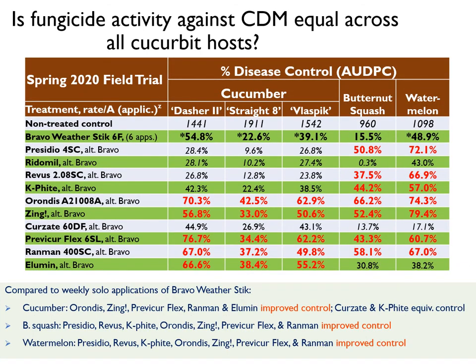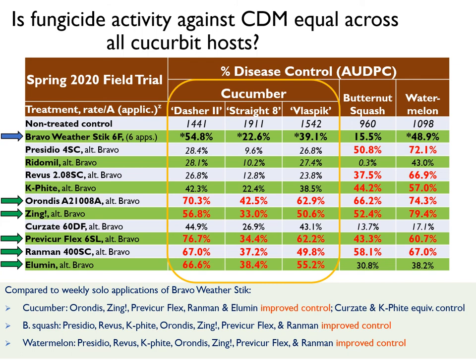Last spring, we repeated the trial but increased the number of cucumber varieties to include the highly susceptible Straight-8 and the pickling variety Vlaspik. We also included watermelon Jade Star, along with the fungicides Caefite, Ridomil, and Zing. In cucumber, fungicide performance was relatively similar across all three varieties. Bravo alone statistically suppressed downy mildew in all varieties. Rotations with Orondis, Zing, Previcure Flex, Ranman, and Illumin improved disease control, while Caefite and Kirzate gave equivalent control to Bravo alone. Rotations with Presidio, Ridomil, and Revus statistically reduced disease control compared to Bravo alone.